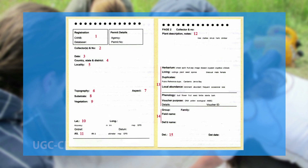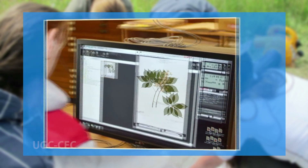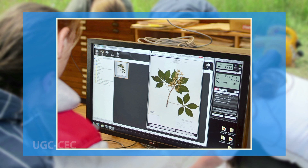Labeling — a herbarium label of standard size is glued to the sheet, usually in the lower right-hand corner after the specimen has been mounted. The specimen label should include the plant's name, family, local name, locality, latitude, longitude, altitude, date of collection, collection number, brief field note, and collector's name. Field note writing — the information from the field notebook is transferred to a typed or computer-generated herbarium label or specimen label. The field notebook information should be written in black ink so that it stays legible for a long time.